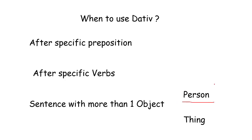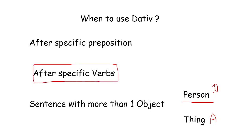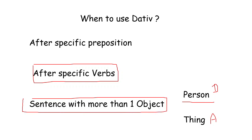With the person we normally use dative, and with the thing we use accusative. We divide verbs into two categories: dative verbs — always dative; and accusative-and-dative verbs — with the person we use dative, with the thing we use accusative.